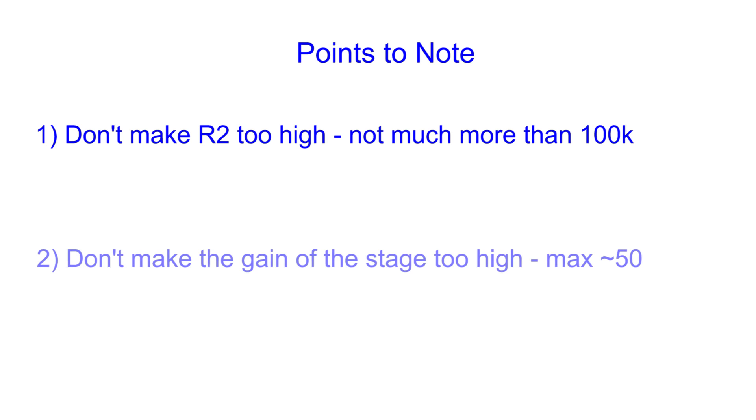So a few hints and tips. Don't make the value of R2 too high. It's often best to keep the value down to no more than 100k or so. And don't make the gain of each individual stage too high otherwise the bandwidth may be limited. But that's a topic for another video. 10 to 20 is very good. 50 may be the absolute tops dependent upon the circuit and the requirements.